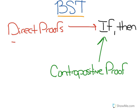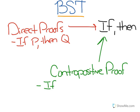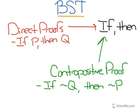So if a direct proof was defined as proving if P then Q, then a contrapositive proof is defined as proving if not Q — this is the symbol for not — then not P. And this is logically equivalent to the direct proof method, but a lot of times it's easier to prove.